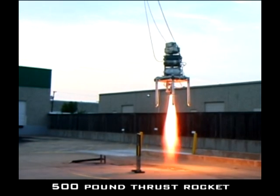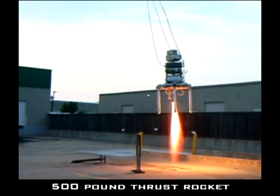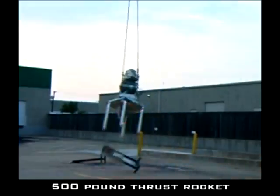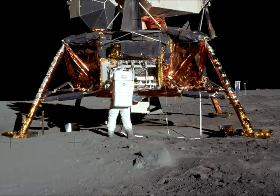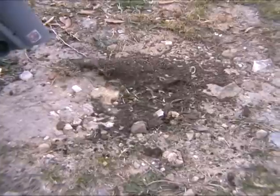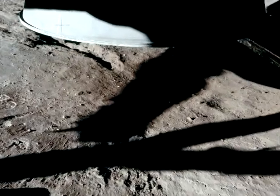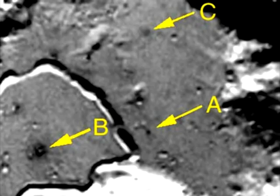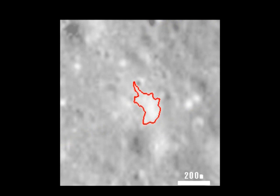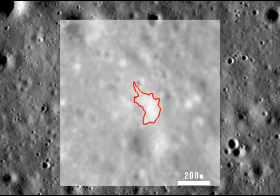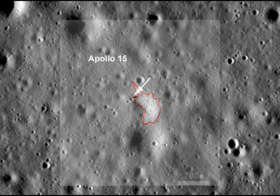We know that the lunar module's 3,000-pound thrust engine should have left a blast crater in the surface. It didn't. We know that it should have blown away any loose dust directly under the engine bell. It didn't. And as all propagandists have insisted, we know the lunar module's engine should have left a disturbance visible from outer space. Now, thanks largely to NASA's Lunar Reconnaissance Orbiter, we can emphatically say that it didn't.